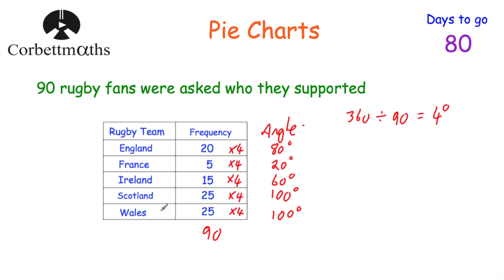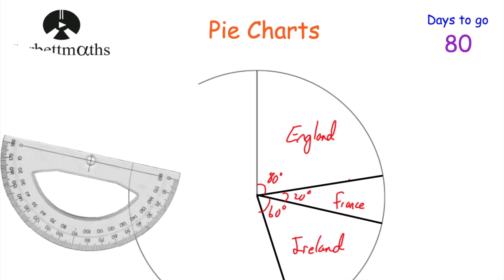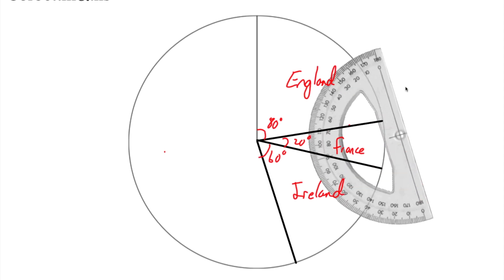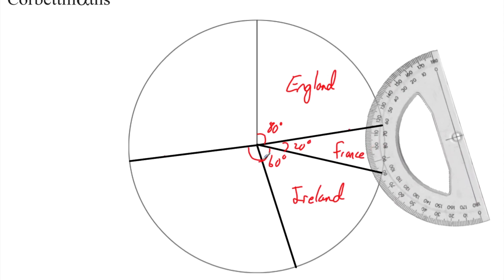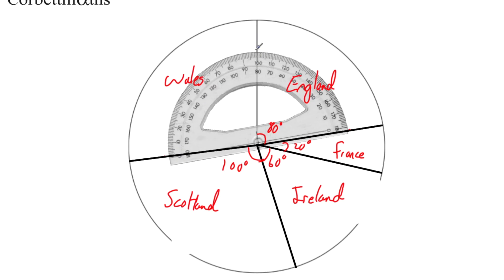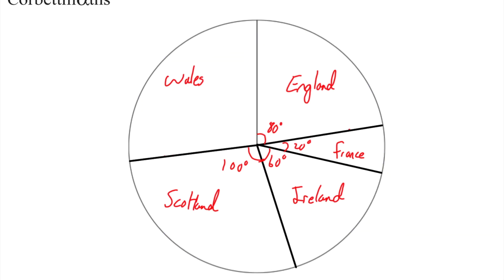Next we've got the Scottish fans at 100 degrees and the Welsh fans also at 100 degrees. We put the center of the protractor on the center of the pie chart, the zero on the line we've just drawn, and go around to 100 degrees — past the right angle at 90, another 10 because it's an obtuse angle. We draw a line for Scotland, then measure the remaining sector for Wales, which should also be 100 degrees. And confirmed — that is 100 degrees for Wales.